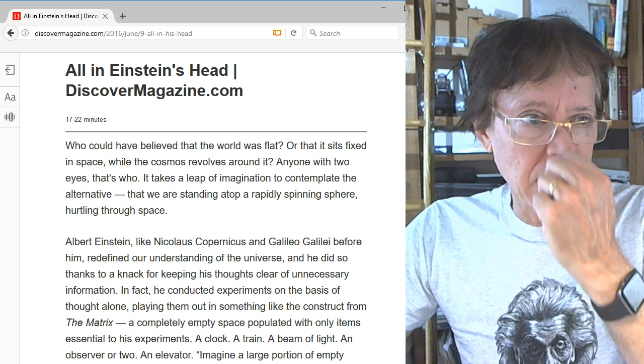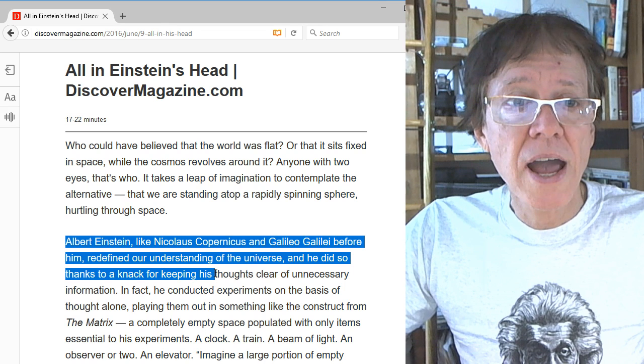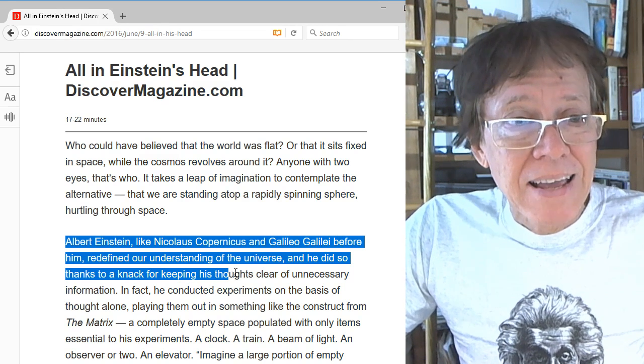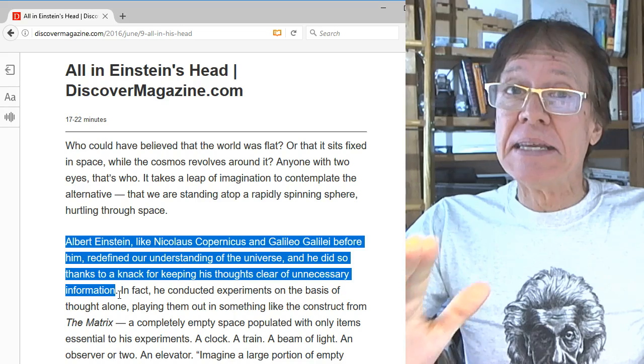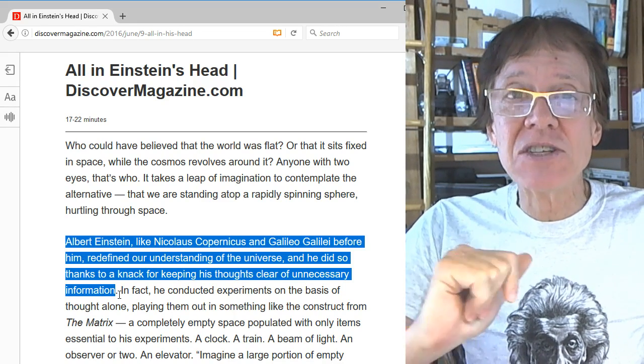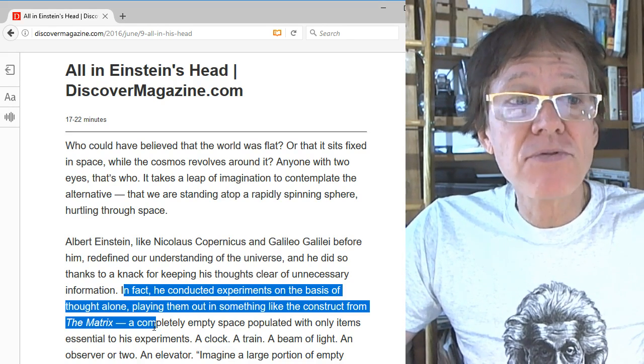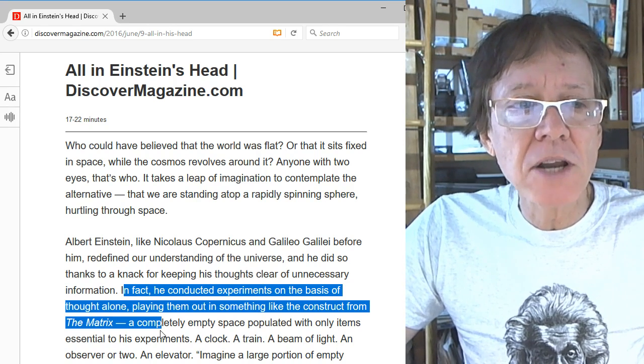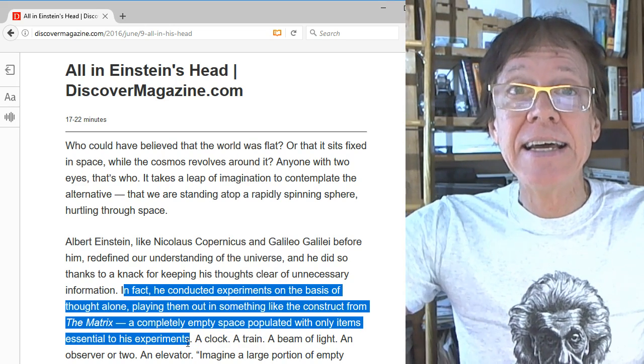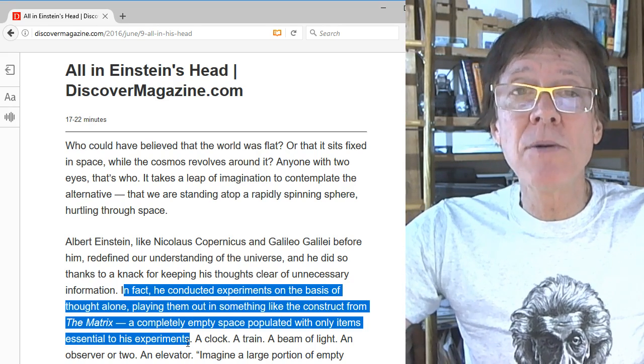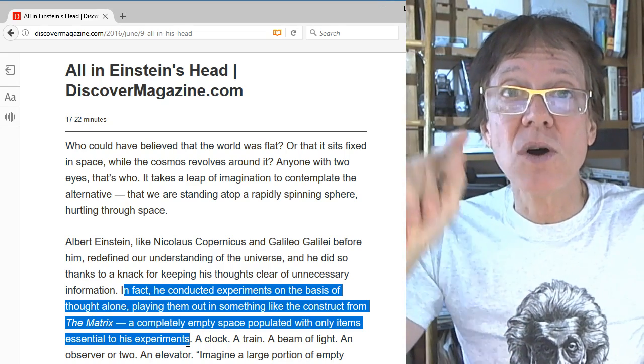We'll start the second sentence. Albert Einstein, like Nicholas Copernicus and Galileo Galilei before him, redefined our understanding of the universe. And he did so thanks to keeping his thoughts clear of unnecessary information. In fact, he conducted experiments on the basis of thought alone, playing them out in something like the construct from The Matrix, a completely empty space populated only by items essential to his experiments. Again, this is the downfall. It's not his experiments, it's not his thought, it's not the details of what he's doing. It's the basis for how he does it, where it goes drastically wrong.